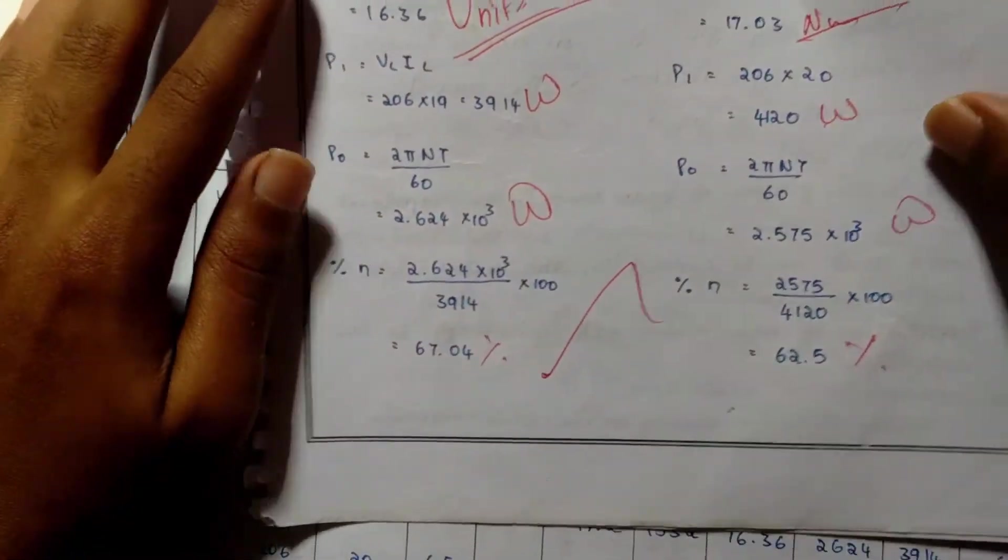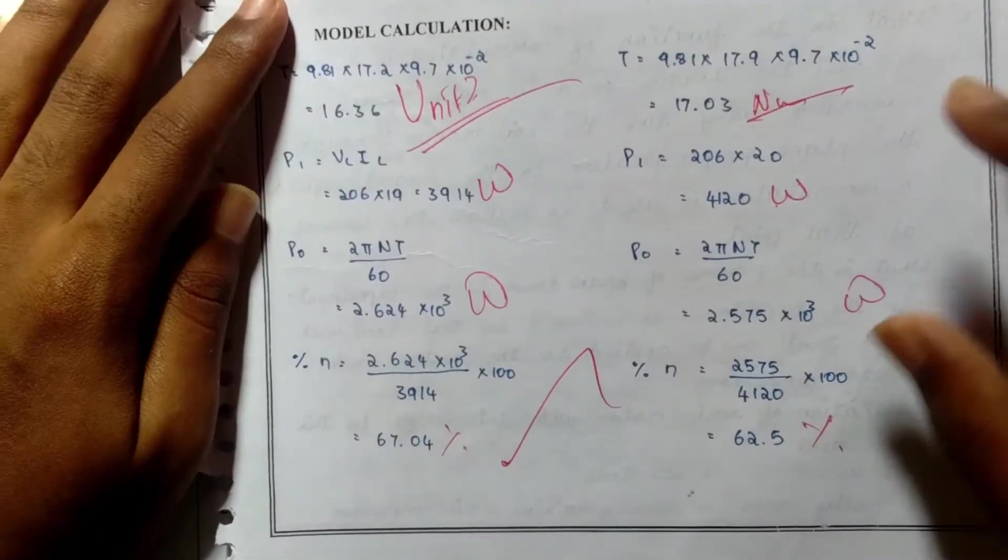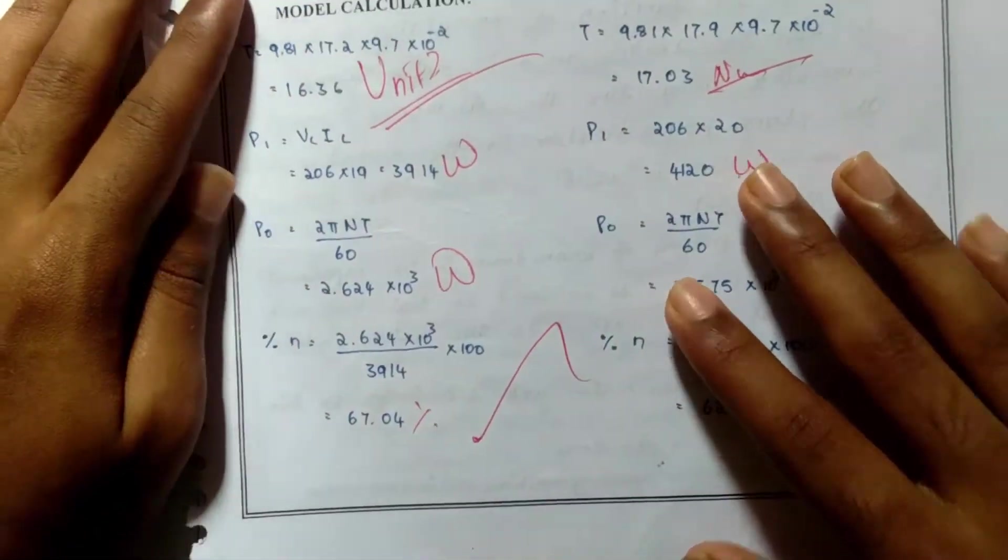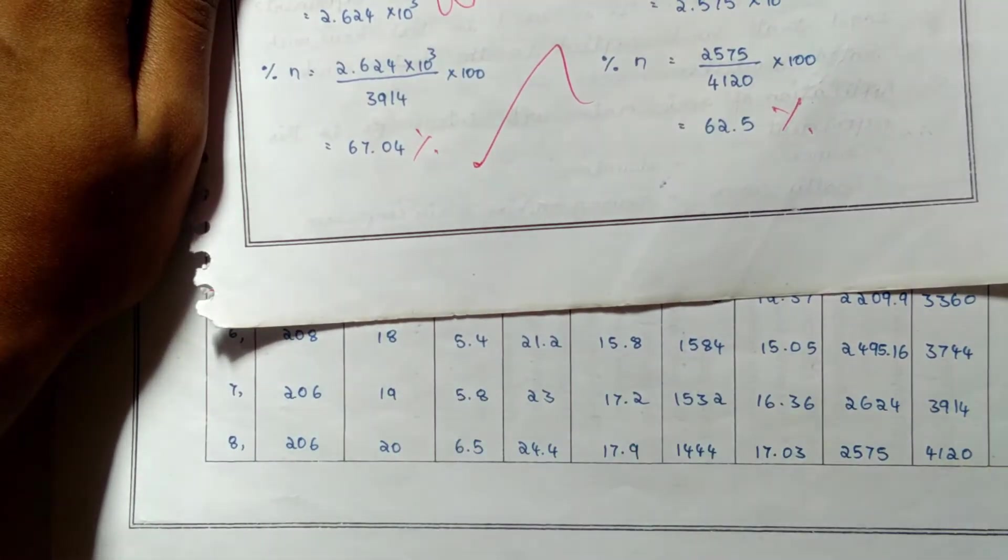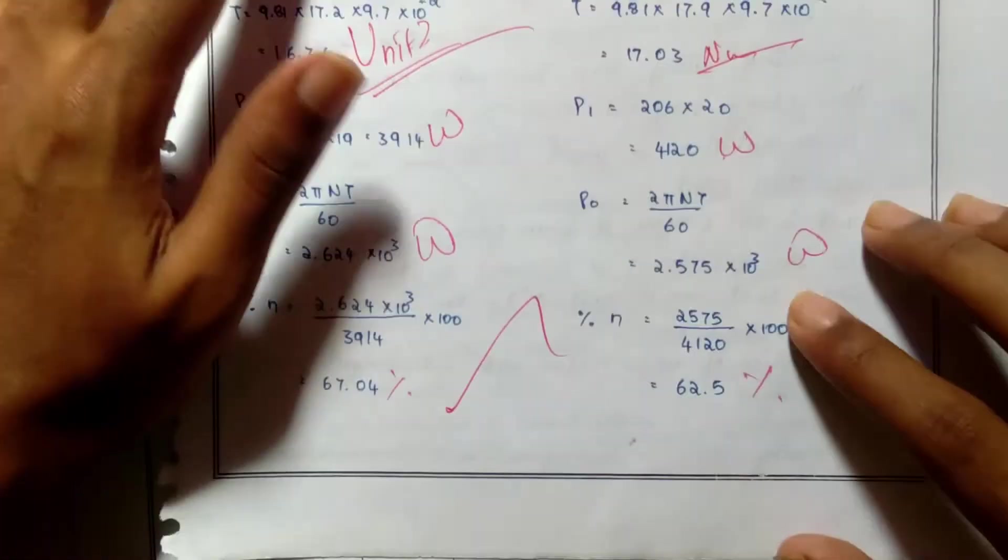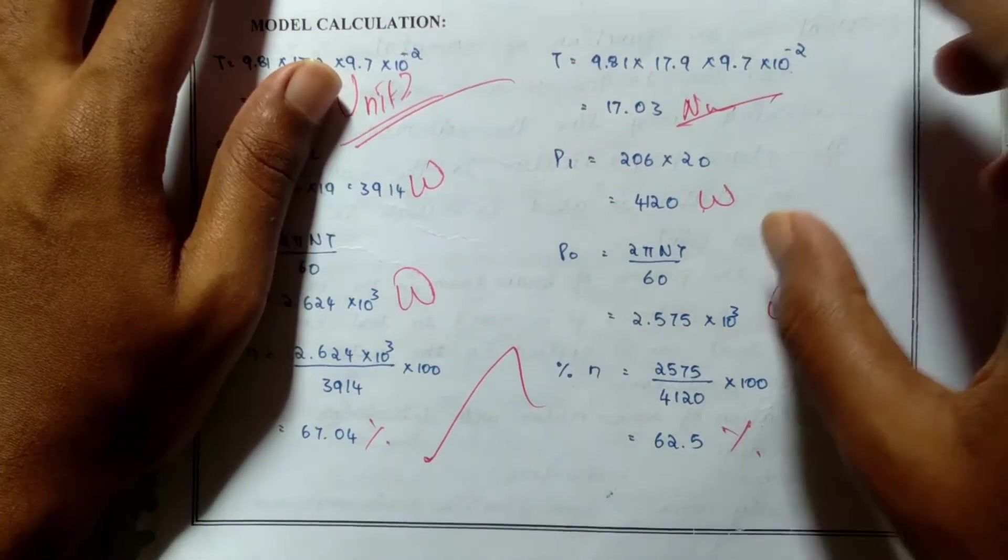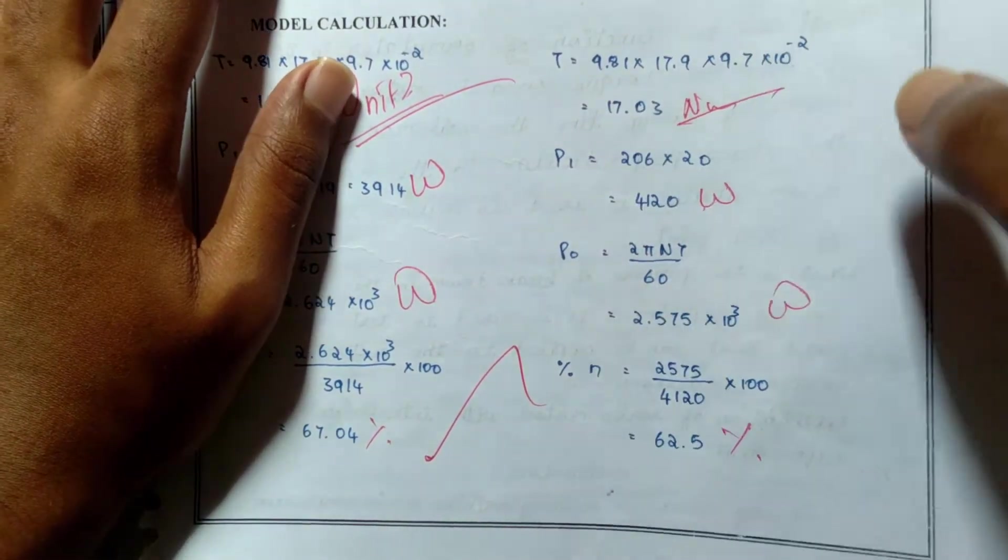I will show the model calculation for this experiment. I have just taken the last two values. I will show the last value model calculation. T is equal to 9.81 times 17.9 times 9.7 times 10 to the power minus 2.